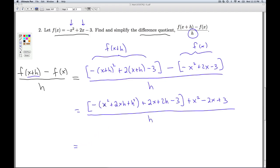Now I'm going to distribute this negative through and get rid of the grouping symbols. I have the opposite of x squared minus 2xh minus h squared plus 2x plus 2h minus 3 plus x squared minus 2x plus 3. All divided by h.